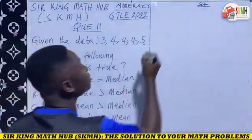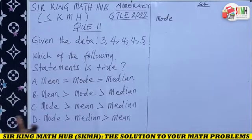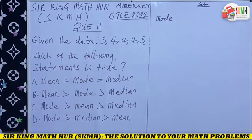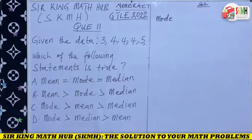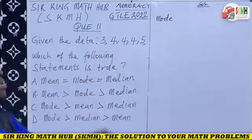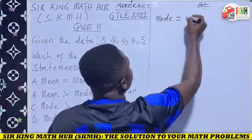First, let's calculate the mode. In statistics, we have three measures of central tendency: mean, mode, and median. The mode is the most occurring number in the given data. In this data set, 3 occurs once, 4 occurs three times, and 5 occurs once. Clearly, the mode is 4 because it appears most frequently.